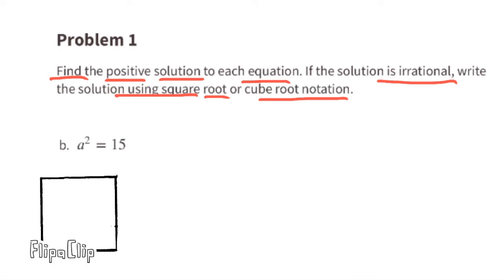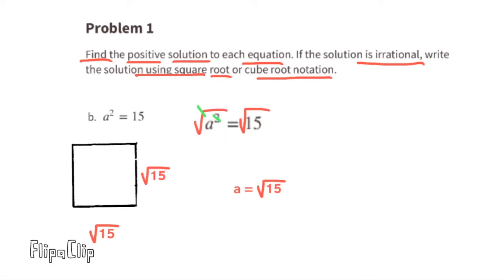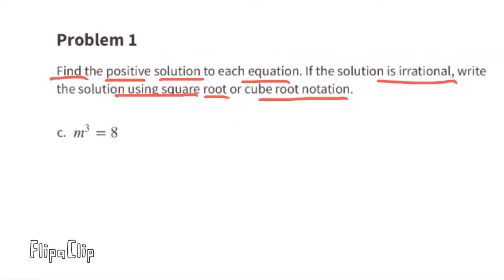Part b: a squared equals 15. The square root of a squared is a, and the square root of 15 is irrational because it never repeats and never terminates. So when a squared equals 15, then a equals the square root of 15.